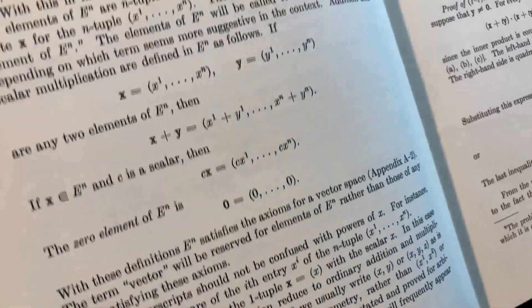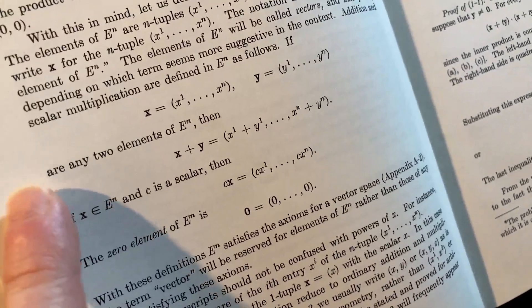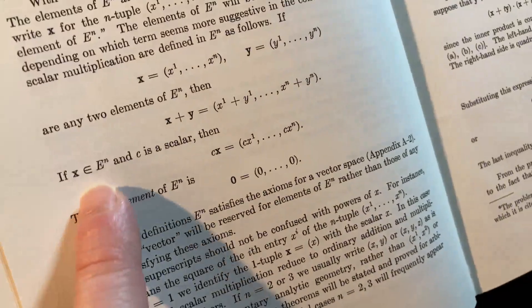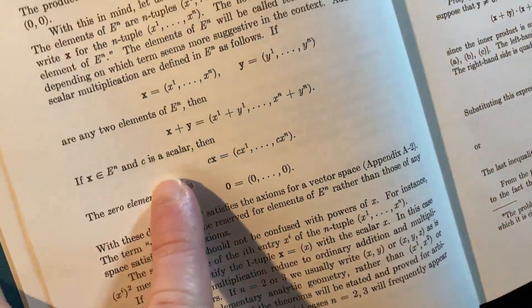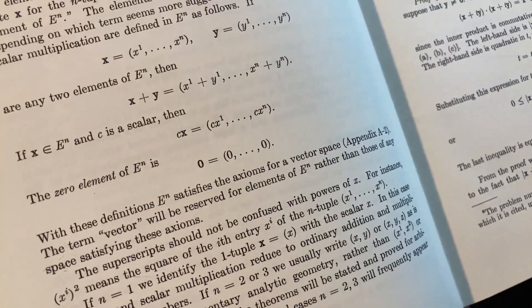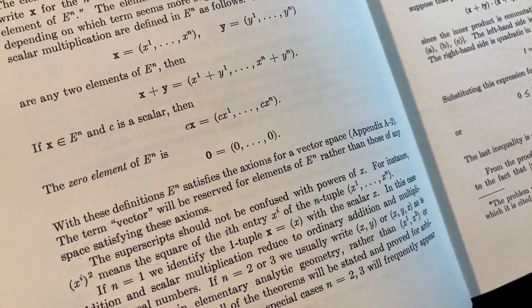You just add the corresponding components. Really basic, right? This is really basic. If X is in EN and C is a scalar, then that's the scalar product. And then the zero element, that's the vector whose entries are all zeros.